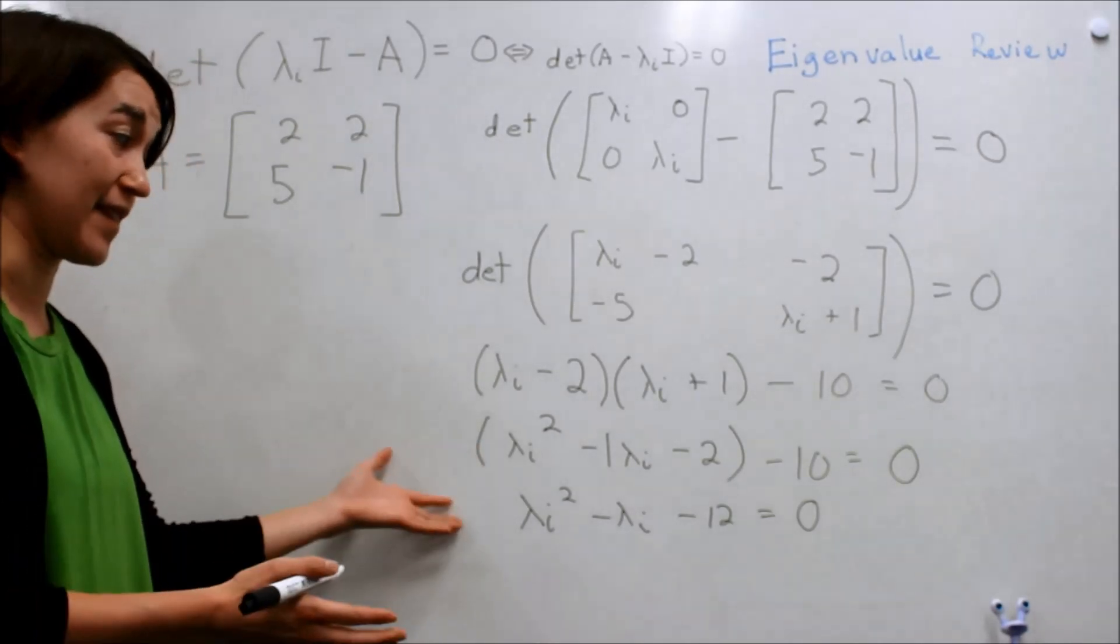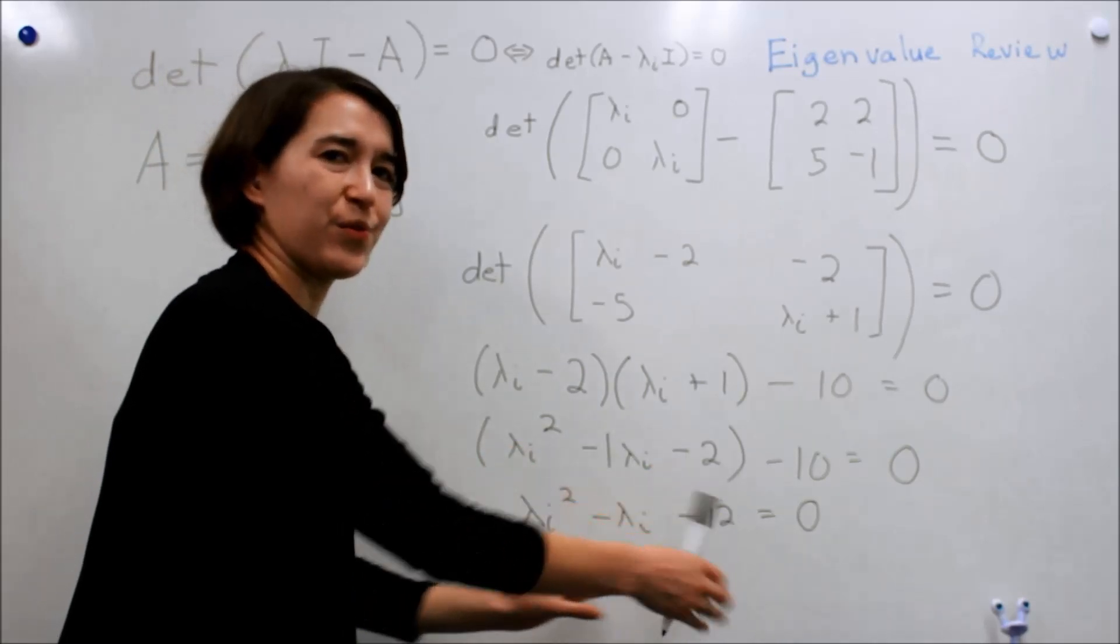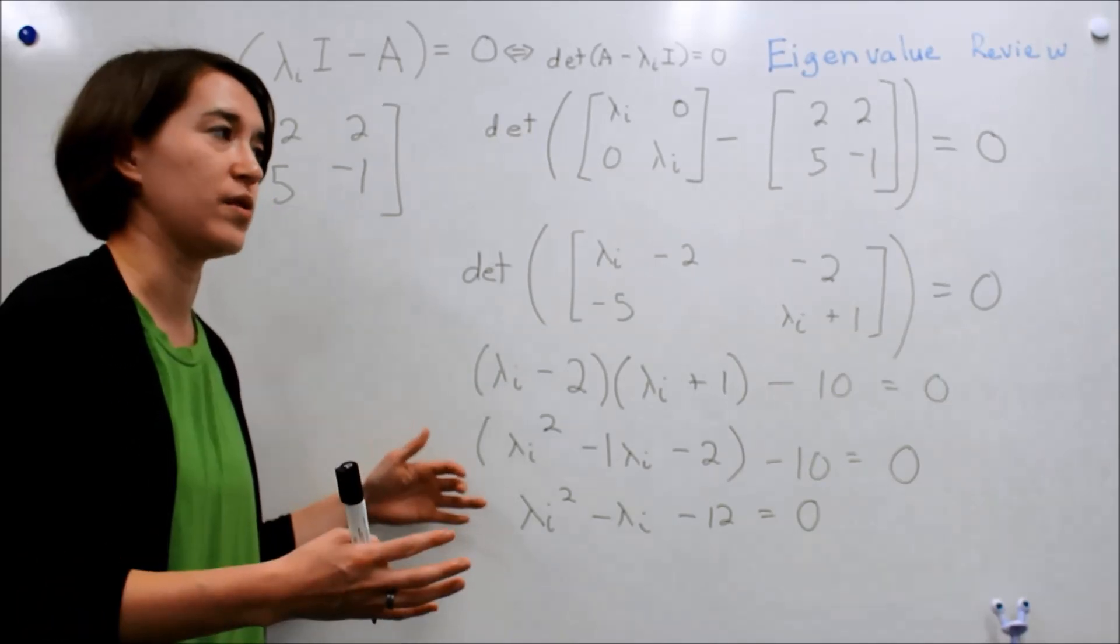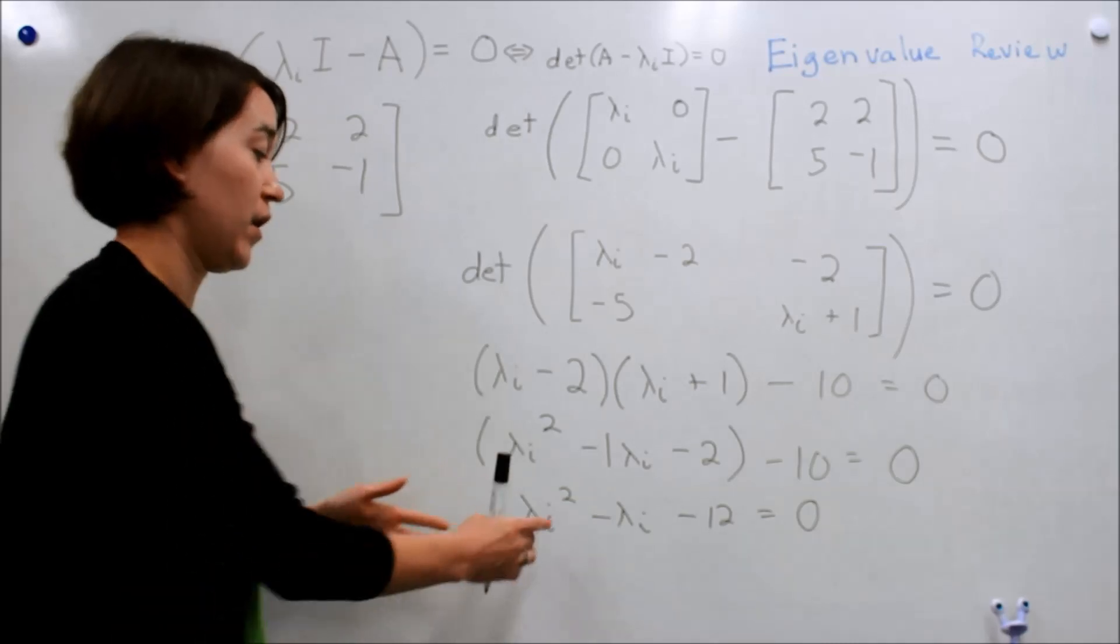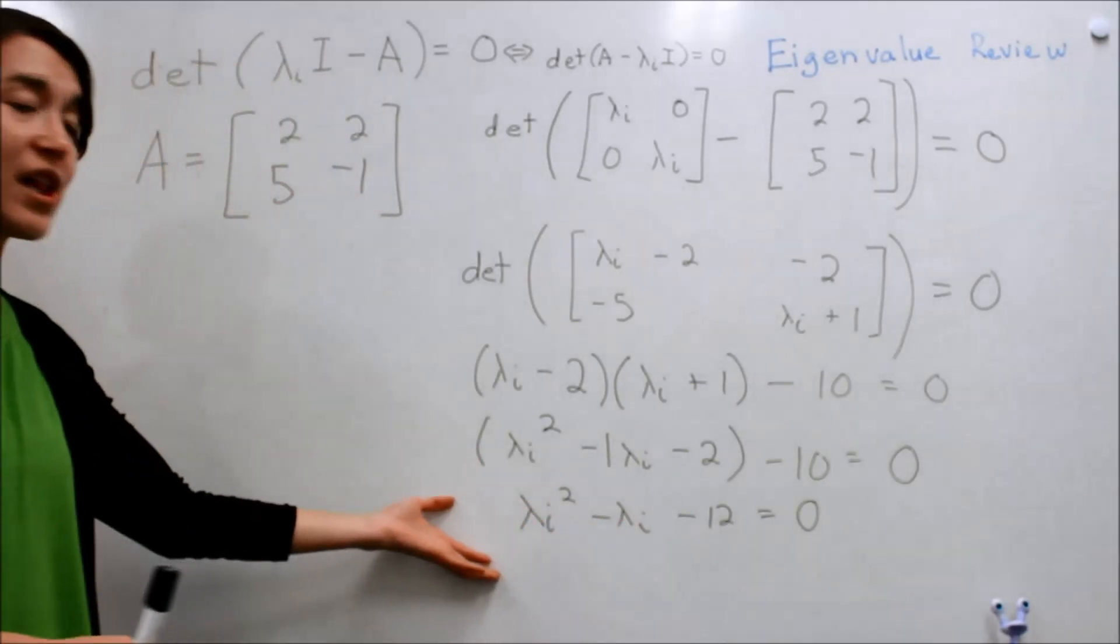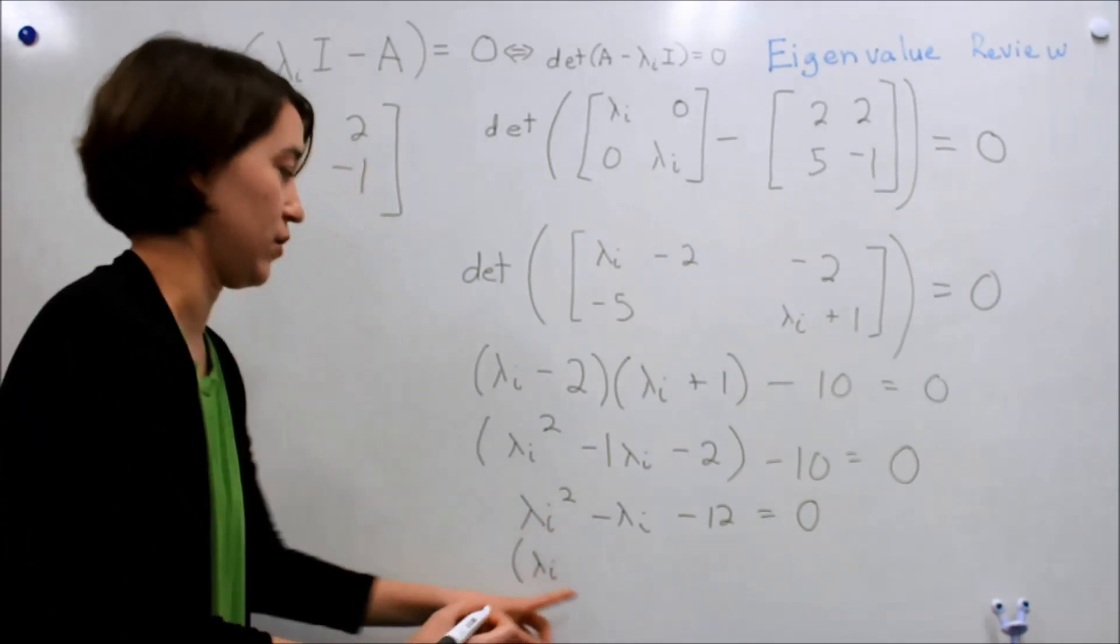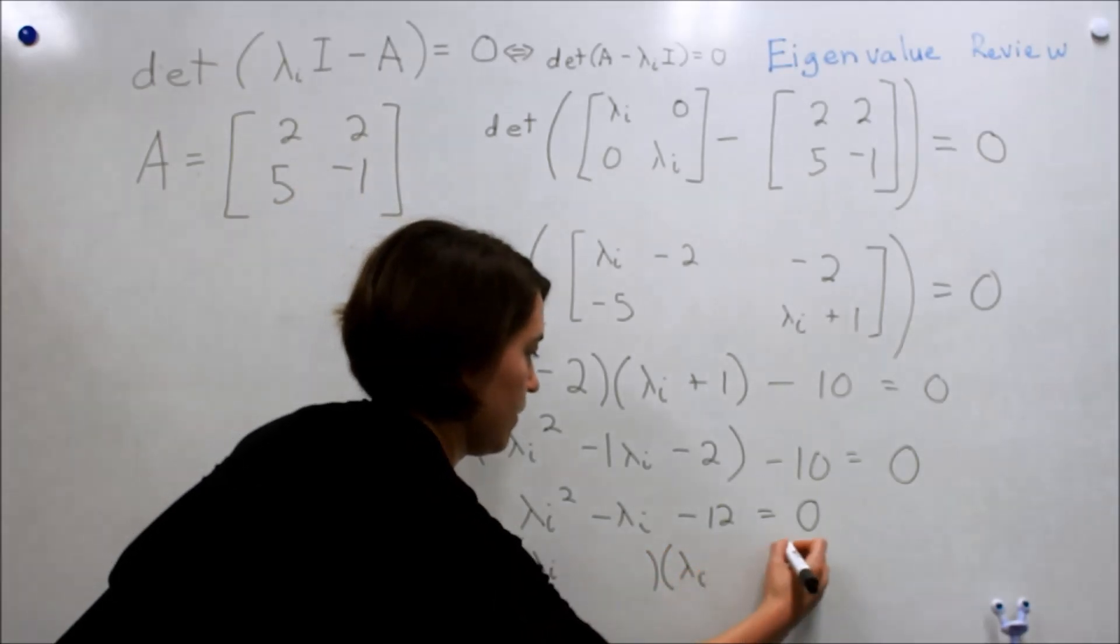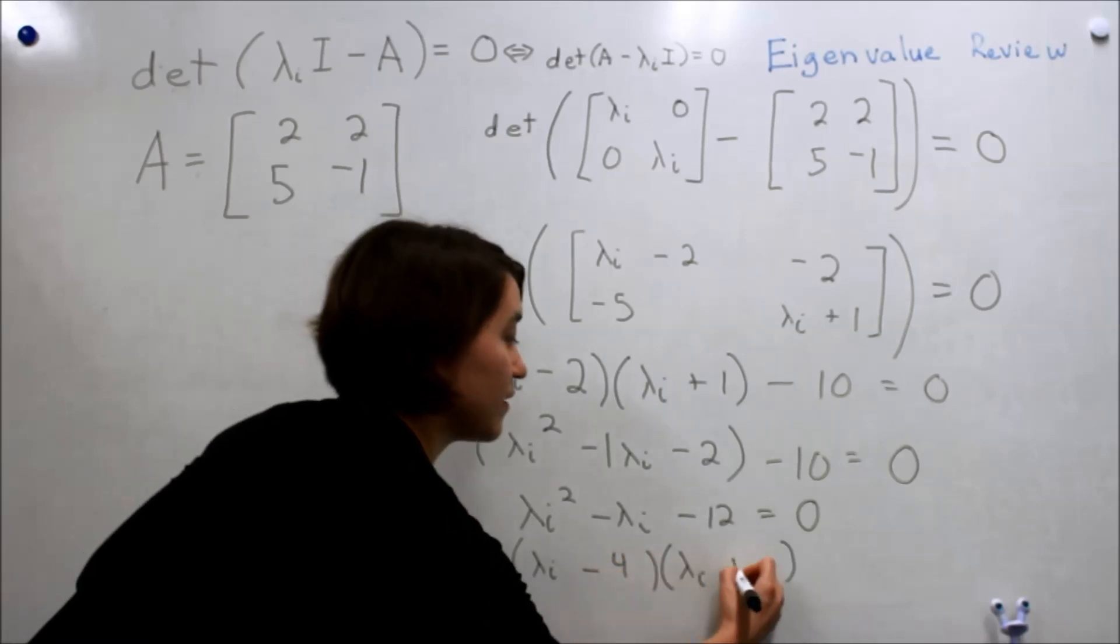Sometimes in nice equations like this one, you can figure out what this will break down into very easily. If you can't figure out this, you'll have to use the quadratic formula to figure out the values of these lambdas, these eigenvalues. Luckily this one works out, so we can see that this breaks down into negative 4 here and positive 3 here.